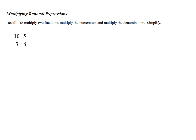To multiply rational expressions, we want to remember how to multiply fractions. So here's an example: 10 over 3 times 5 over 8. When we multiply two fractions, the rule is to multiply straight across, both the numerator and denominator.